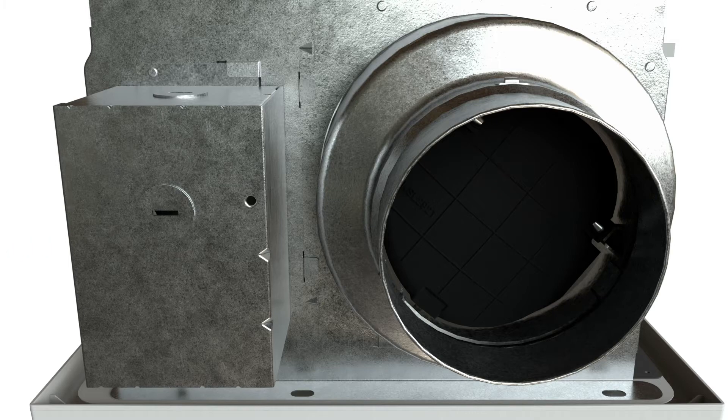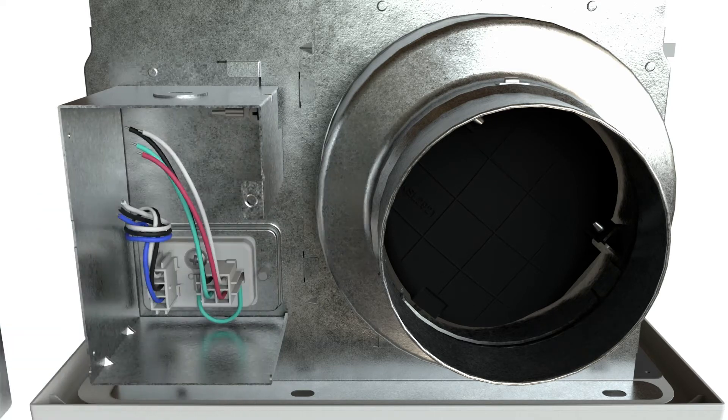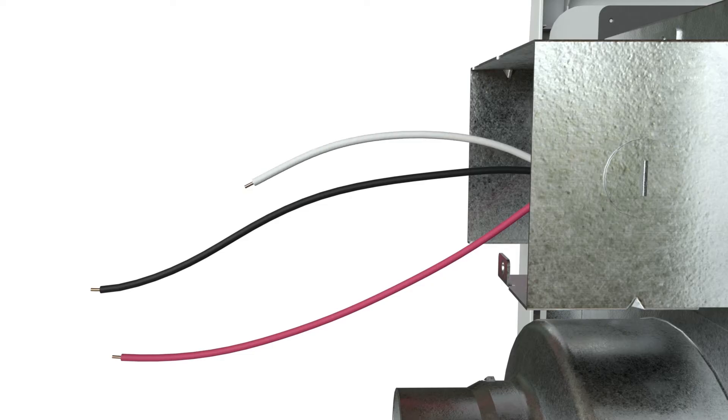Upon opening the fan's junction box cover you will find that the Whisperwarm DC contains black, red, white, and green wire leads.